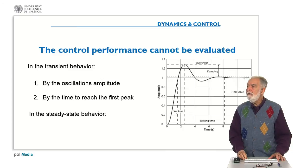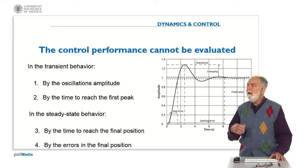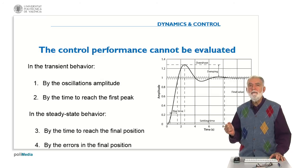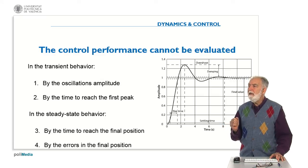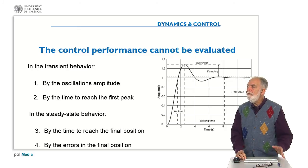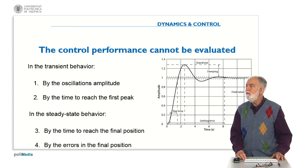And in the case of the steady state behavior, can we evaluate the performance of the control by the time we need to reach the final position? Or by the errors appearing in the final position? Which one of these four options is wrong? In the sense that cannot be used to evaluate either the transient behavior or the steady state behavior. Time for you to think about that.